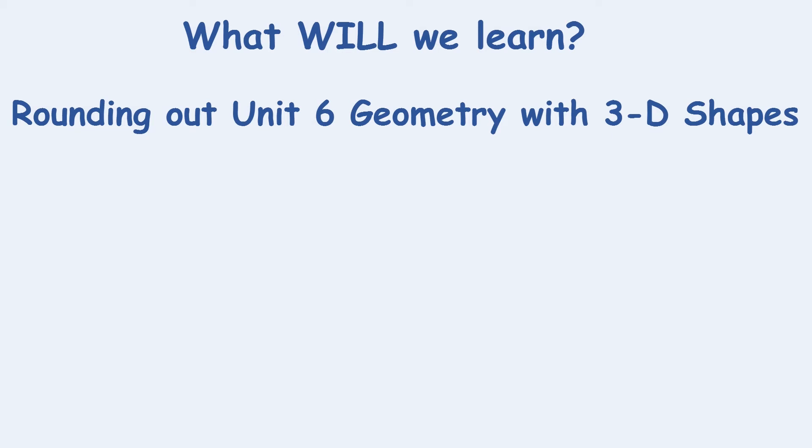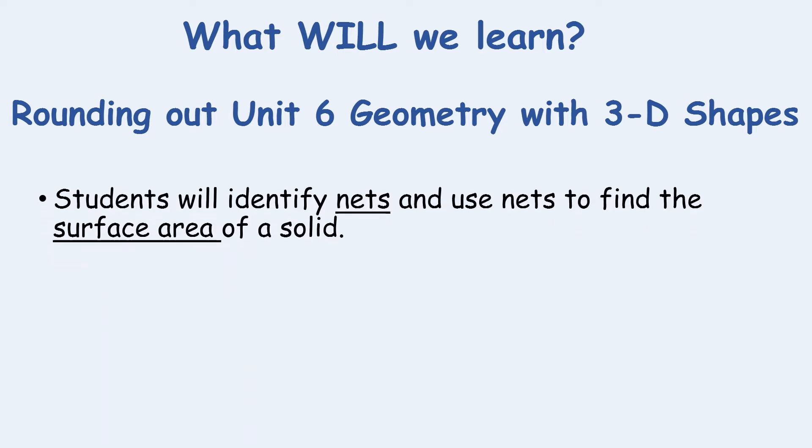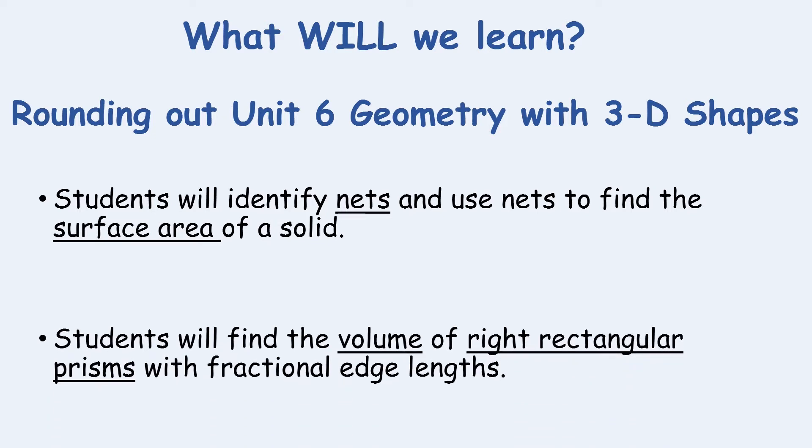This week, we will be rounding out Unit 6 geometry and focusing on three-dimensional shapes. Our two objectives are: first, students will identify nets and use nets to find surface area of the solids. And second, students will find the volume of right rectangular prisms with fractional edge lengths. Notice the underlined words: nets, surface area, volume, and right rectangular prisms. Hopefully you've heard of these before — if not, we're going to investigate them further.